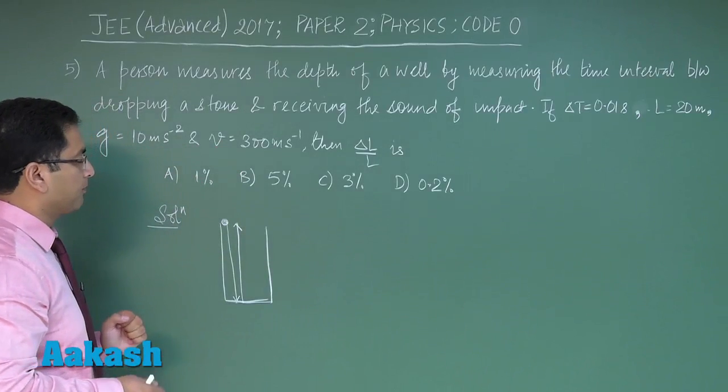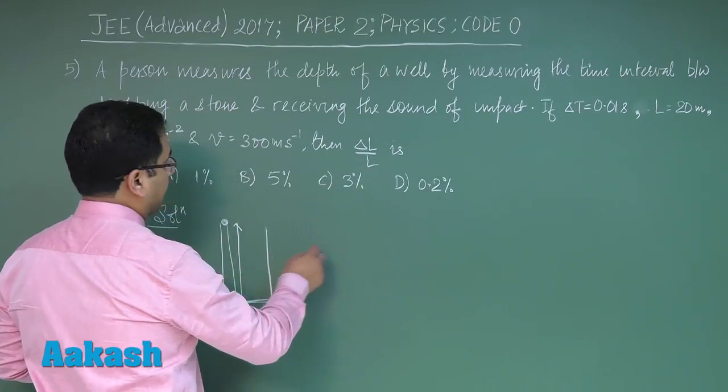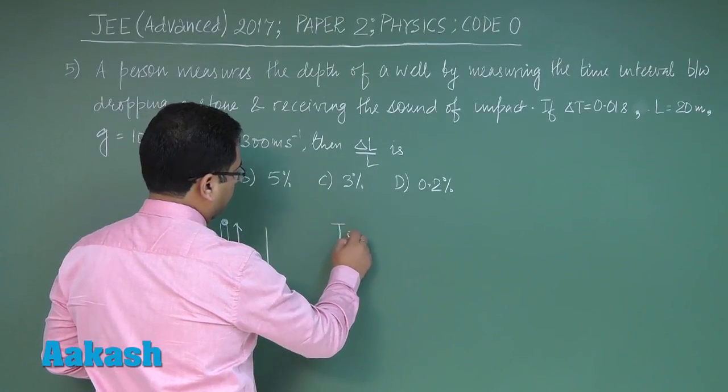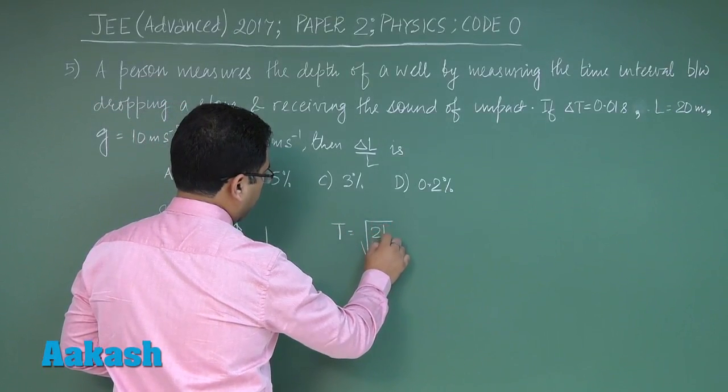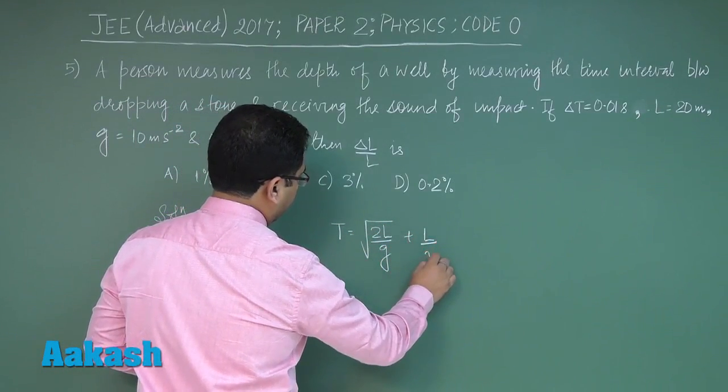Let's see. The time would be T = √(2L/g) + L/V.